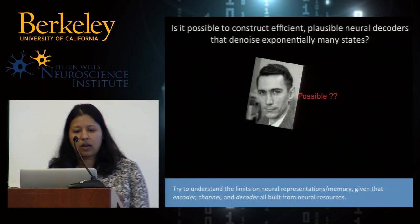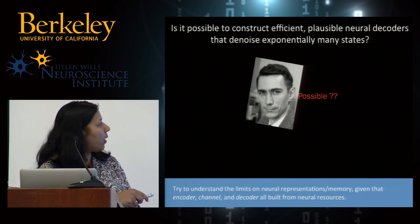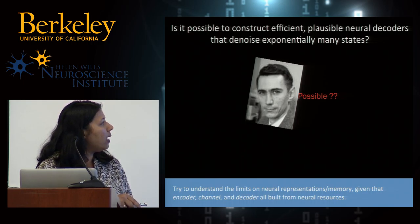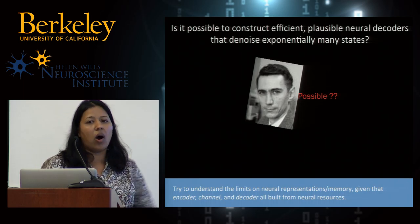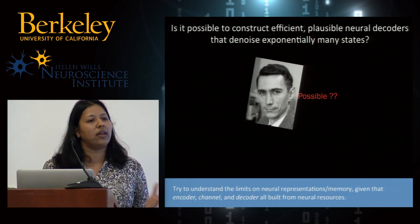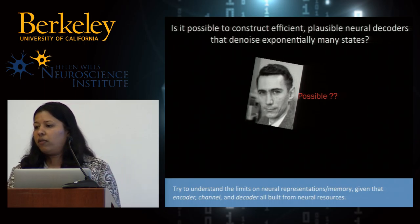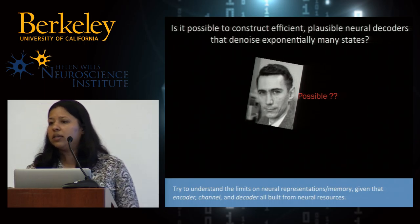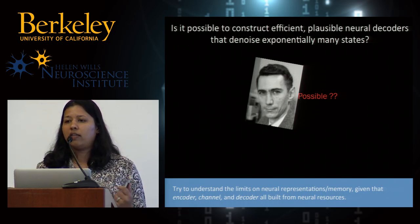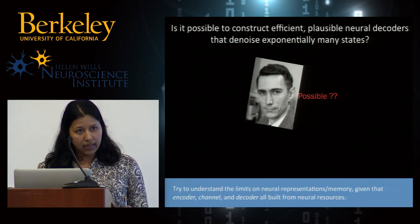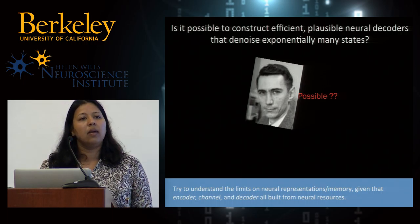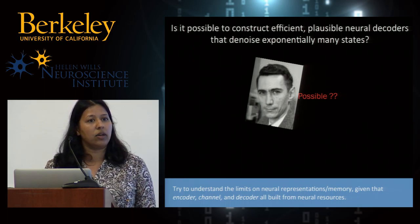In the brain, the neural representations and memory in these systems mean the encoder, channel, and decoder are all built by neurons — it's all using the same resources. If decoding involves exponentially many neurons, you've nullified the gains made by the encoding step. So we really have to understand whether it's possible to do decoding of exponentially many states, or denoising, using linearly many neurons. That's the next question.